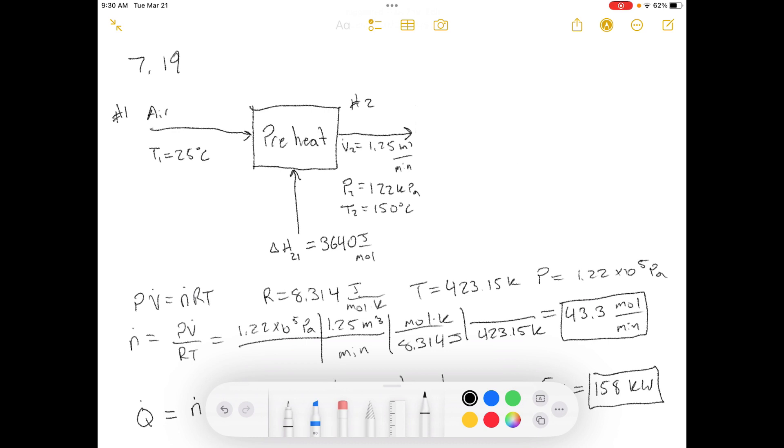Air is heated from 25 degrees Celsius to 150 degrees Celsius prior to entering a combustion furnace. The change in specific enthalpy associated with this transition is 3,640 joules per mole. The flow rate of air at the heater outlet is 125 meters cubed per minute, and the air pressure at this point is 122 kilopascals absolute. Part A: Calculate the heat requirement in kilowatts, assuming ideal gas behavior, and that kinetic and potential energy changes from the heater inlet to the outlet are negligible.